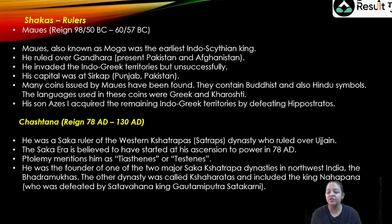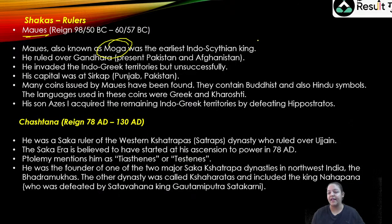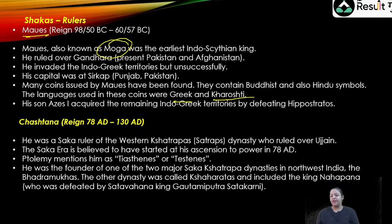I'm sure you are familiar with Rudradaman, who repaired the Sudarshan Lake and is one of the best rulers of the Shaka dynasty. But there are other rulers we should know about. First, we have Moise — also known as Mogha — who was the earliest Indo-Scythian king. He ruled over Gandhara, which is present-day Pakistan and Afghanistan. He invaded Indo-Greek territories but was unsuccessful. His capital was at Sirkap in Punjab, Pakistan.